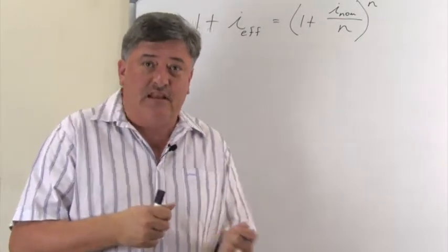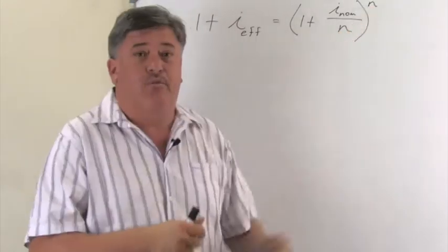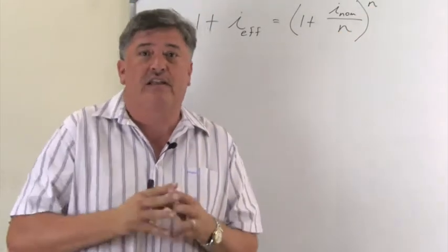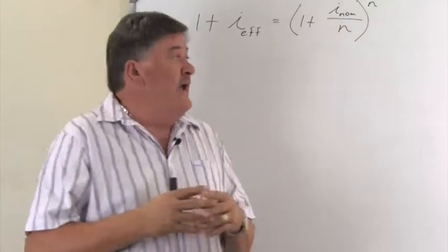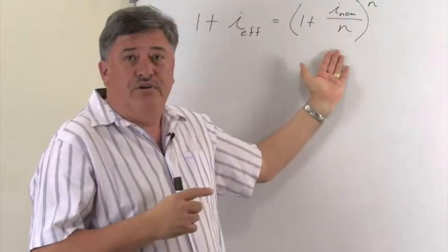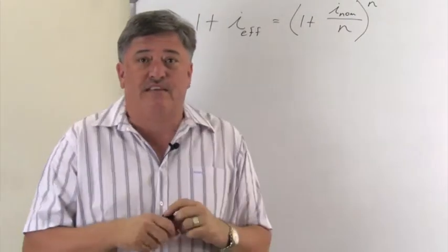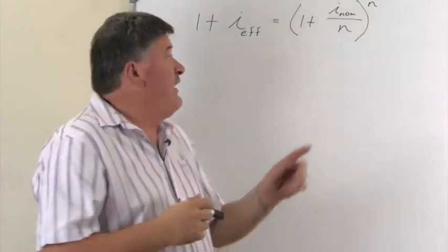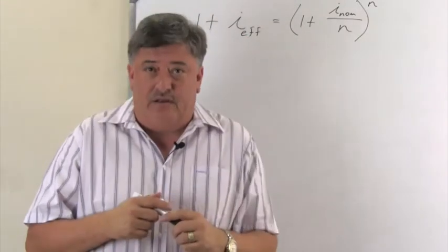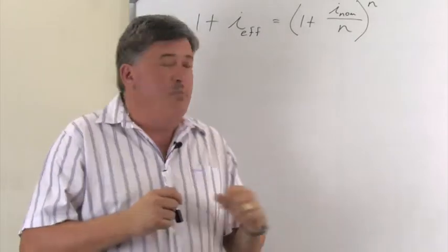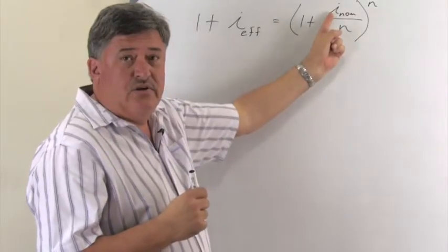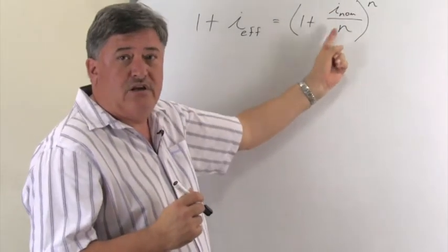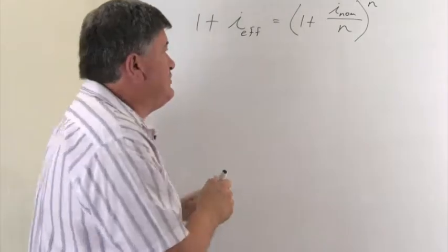It can be monthly, then your n will be 12, quarterly it will be 4, half yearly it will be 2. And that is all you need to do. So for this first example, they ask us to find the effective yearly rate, if the nominal rate is 18%, and it's compounded monthly, so our n will be 12. Let's substitute.